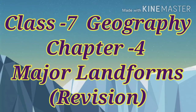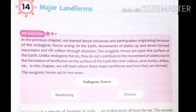Good morning students, welcome once again to my class. This video is for Class 7. Today we'll continue Chapter 4 of Geography, that is Major Landforms. In our previous chapter, we learned about volcanoes and earthquakes originating because of endogenic forces acting on the earth — why volcanoes and earthquakes originate due to endogenic forces acting on the earth.